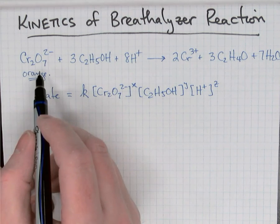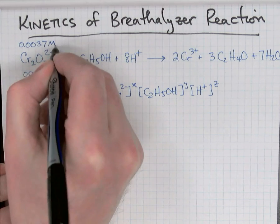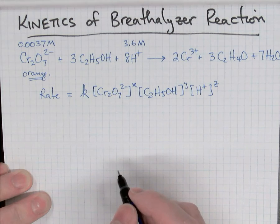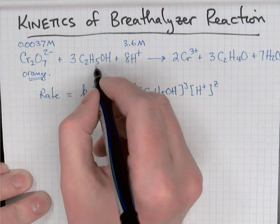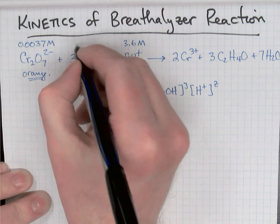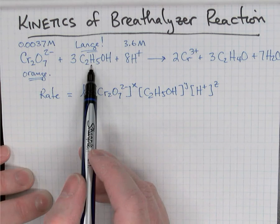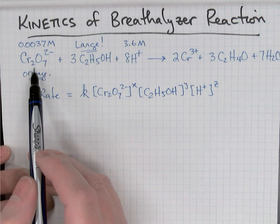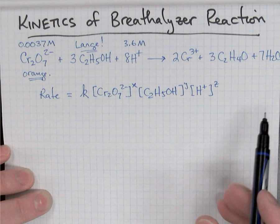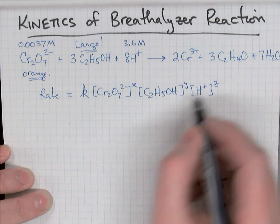The concentration of the dichromate in the original solution was very small. It was 0.0037 molarity. And then in that, there was also 3.6 molarity hydrogen ions from the hydrochloric acid. And then we added pure alcohol. So we added three milliliters to 200 milliliters of dichromate. So we had a very large concentration of alcohol as well. Because the alcohol concentration and the acid concentration are much larger than the dichromate concentration, we can assume that these two concentrations stay constant during the reaction. They don't change very much.